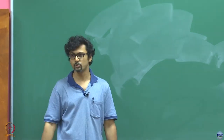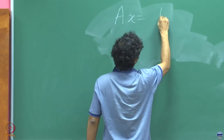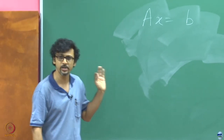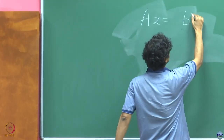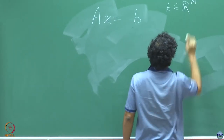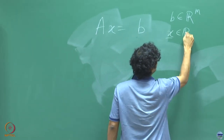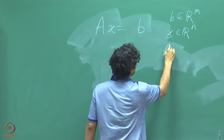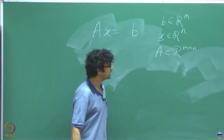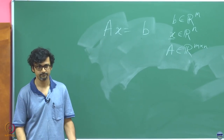So what are we essentially doing? Let us write it in the most generic form. We deal with real numbers for now, looking for real solutions. So b is the right-hand side vector, x is the unknown vector, and A must then be of size m×n. This is the standard way of representing m equations in n unknowns.